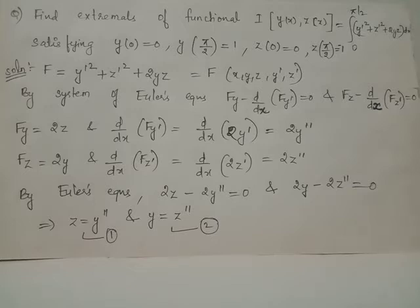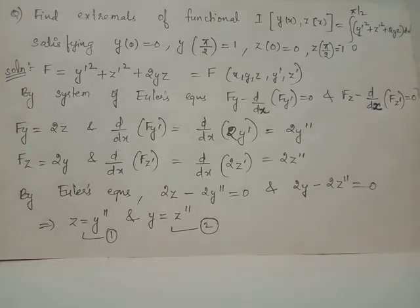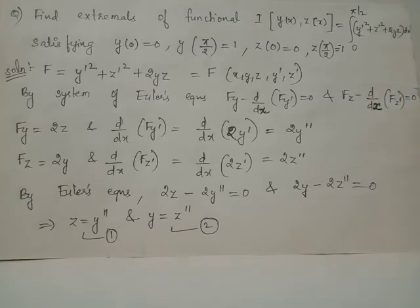F_z dash is the partial derivative of F with respect to z dash, considering y dash, y, and z as constants. Thus F_z dash equals 2z dash. Applying these values in the system of Euler's equations, the first equation gives 2z minus 2y double dash equals 0, and the second equation gives 2y minus 2z double dash equals 0.